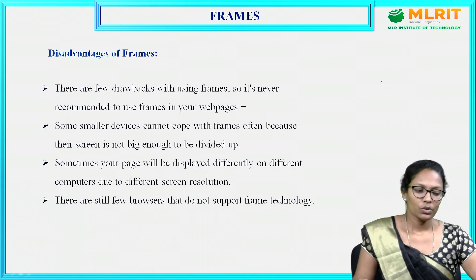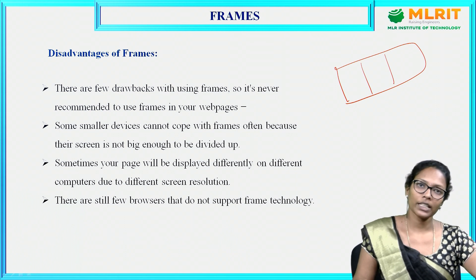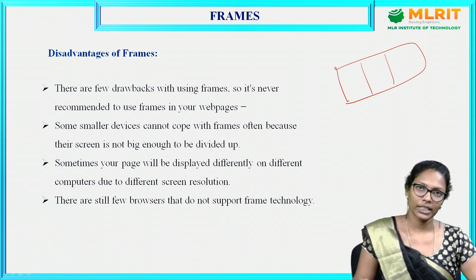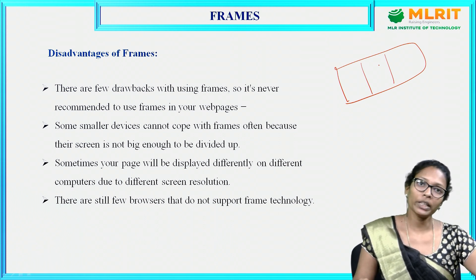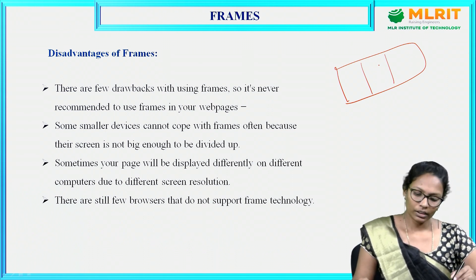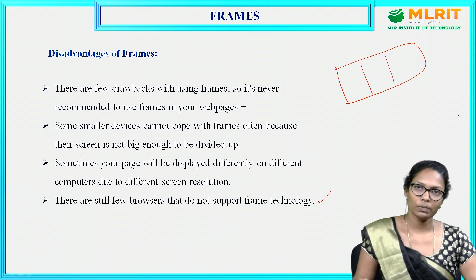The disadvantages of frames: a frame divides the page into multiple parts either as rows or columns. But if the screen size changes — for example, one user has a 32-inch screen and another has a 48-inch screen — the representation will look different, because the page was divided based on one screen resolution. Additionally, most modern web browsers do not support frames, which is why it is not advisable to use them.